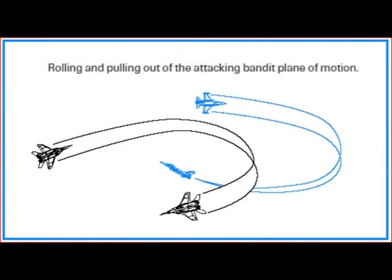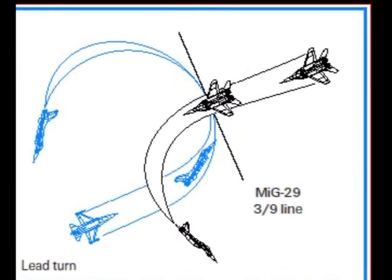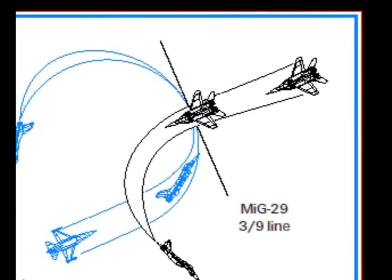Bring the throttle back to idle power and put out speed brakes to rapidly slow down and force the bandit to overshoot you.